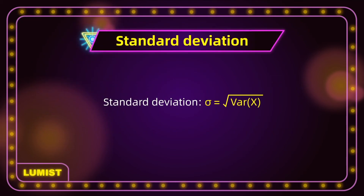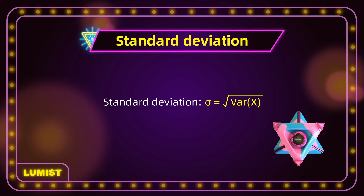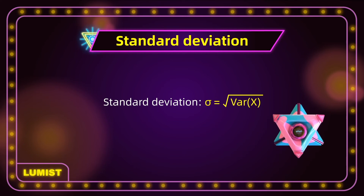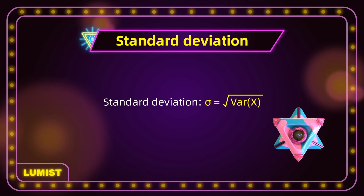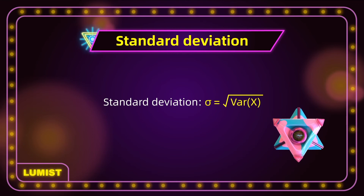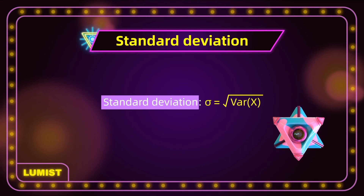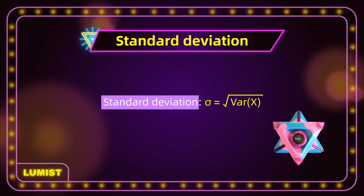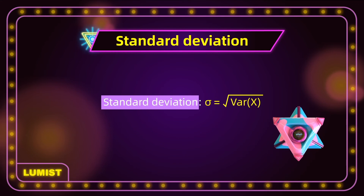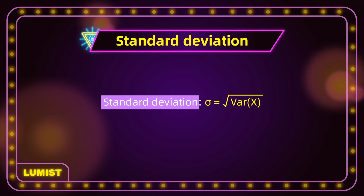One more remark: since the variance has a square in its formula and is written as σ², the variance does not go on the same scale as the random variable x. So we introduce the standard deviation instead. The standard deviation σ equals the square root of Var(x), and is on the same scale as the random variable x.